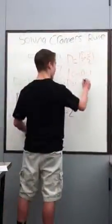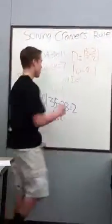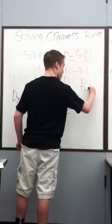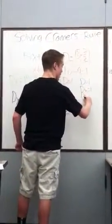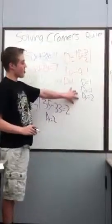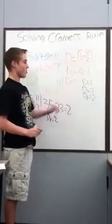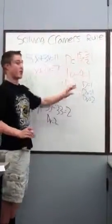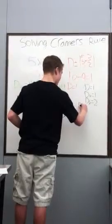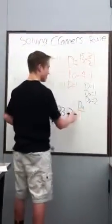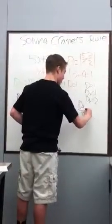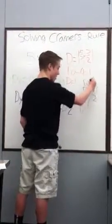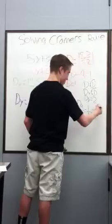So from right here, I have all my values. I have D equals 1, Dx equals 1, and Dy equals 2. From here, I'm going to find out the values by putting them over. The D value, the determinant value, will always be in the denominator. So Dx over D is equal to 1 over 1, which is simply 1.